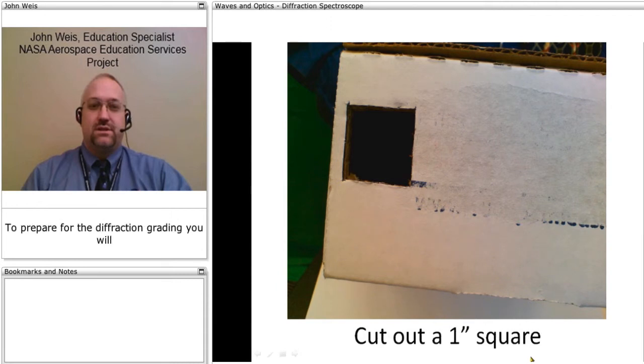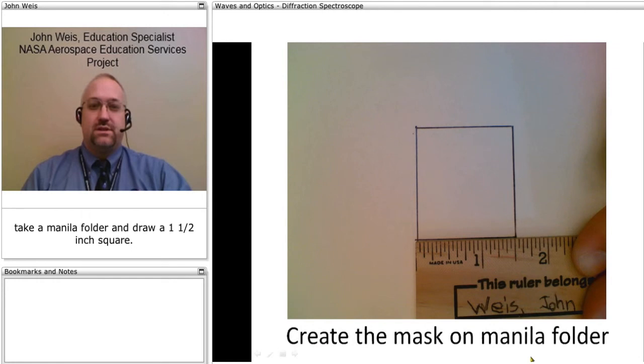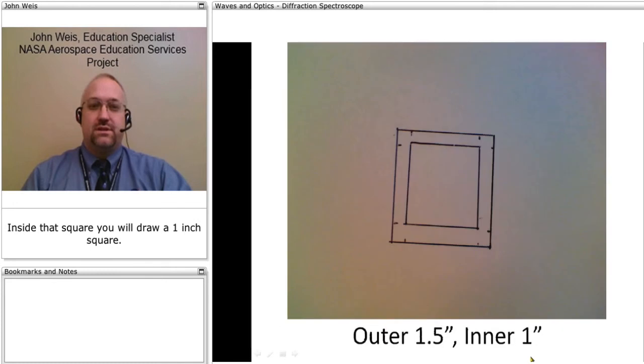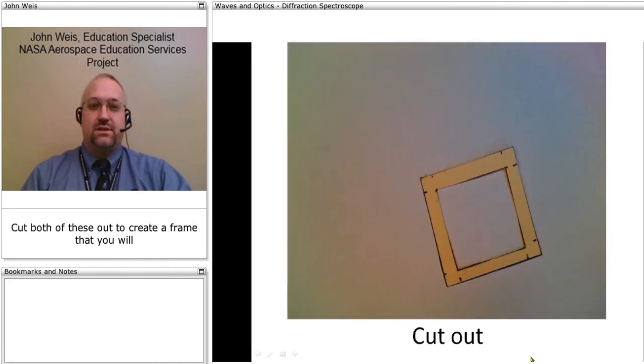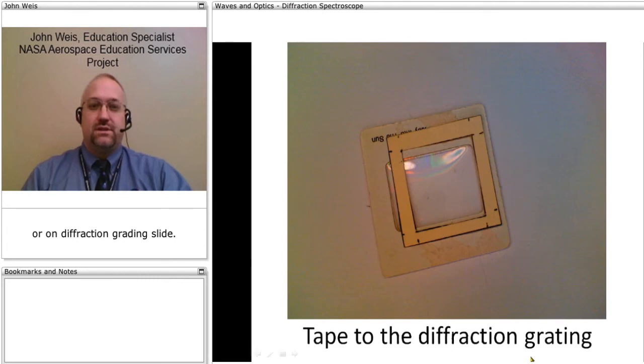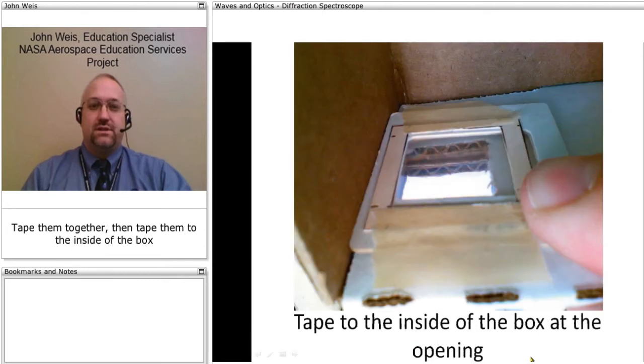To prepare for the diffraction grating, you'll take a manila folder and draw a 1 1⁄2 inch square. Inside that square, you'll draw a 1 inch square. Cut both of these out to create a frame that you'll place on your commercially purchased diffraction grating sheet or on a diffraction grating slide. Tape them together, then tape them to the inside of the box at that 1 inch square viewing hole.